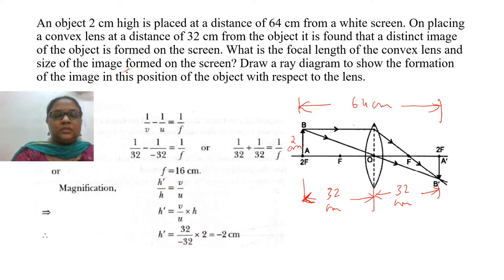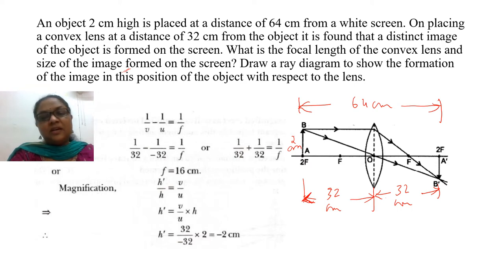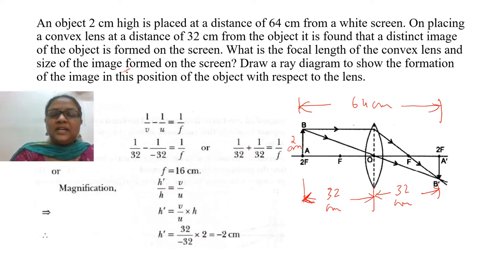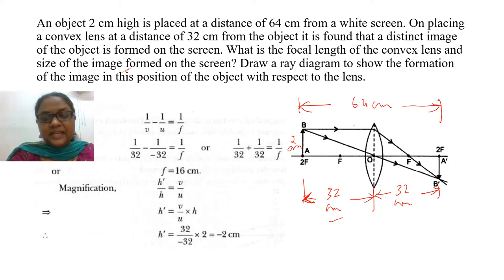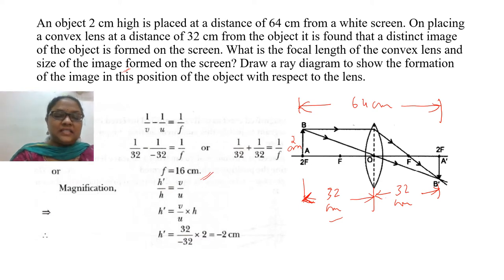Using the lens formula, we can find out the focal length: 1/v minus 1/u equals 1/f. Here V and U are both 32 cm. Substitute: 1/32 minus 1/(-32) equals 1/f. Take the LCM and simplify — you will get 2/32. When you take the reciprocal, you will get the focal length as 16 cm.